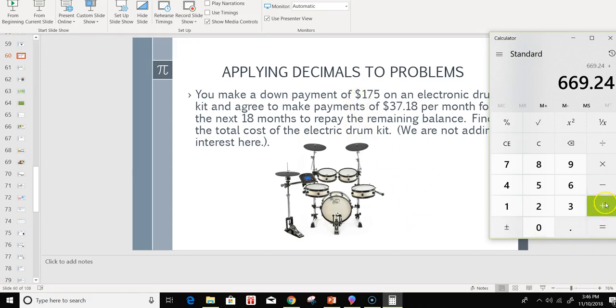Remember, we still have to add the $175. This will give us an equal $844.24, almost $845 to be able to pay for this drum kit.